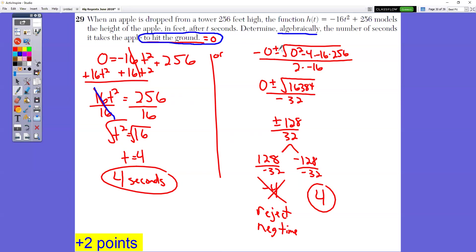The probably easier way to do it is to use the quadratic formula. We don't have a b value here because there is no x value. That's why our b value is zero. Sub it into the quadratic formula, you end up with a four and a negative four. Always reject the negative time because that doesn't make any sense. So it would be four seconds.